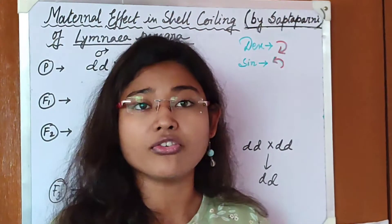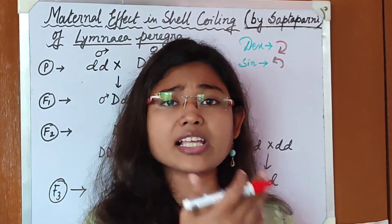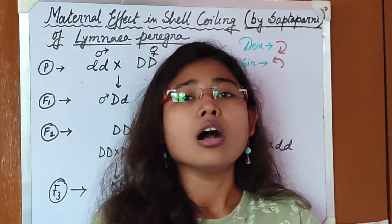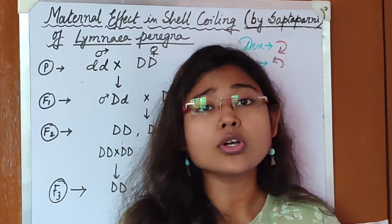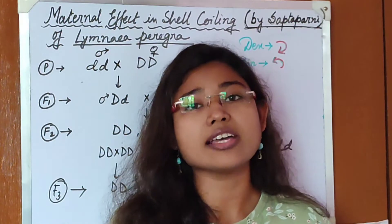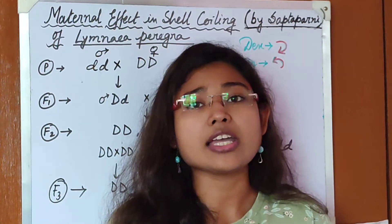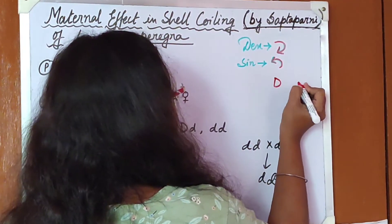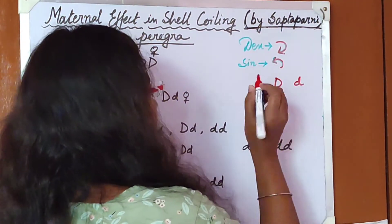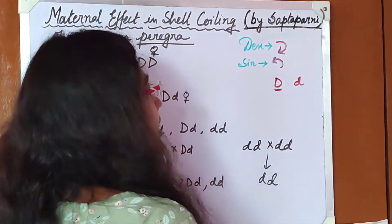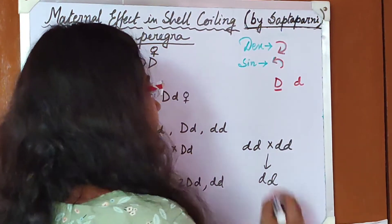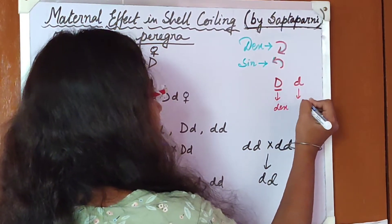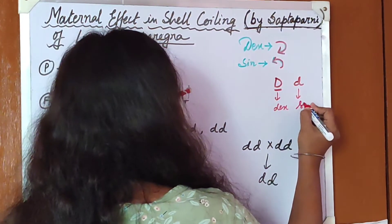Sinistral is the default kind of coiling, and dextral is the modified kind of coiling. A pair of nuclear alleles — capital D and small d — is responsible for this coiling phenotype. Usually, when capital D is present, the coiling is of dextral type, and when small d is present, the coiling is of sinistral type.